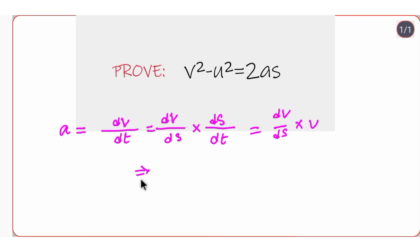Now in the next step we can cross multiply, so ds times a, so a·ds equals v·dv. This is our equation 1.